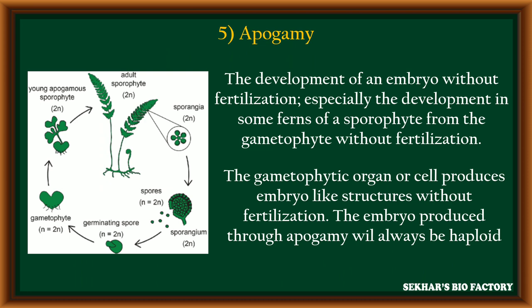The last method is apogamy. Apogamy is generally observed in fern plants. In this method, the development of embryo takes place without fertilization — specifically, the development of some parts of the sporophyte from the gametophyte without fertilization. Gametophytic organs or cells can produce embryo-like structures without fertilization, which can become a new plant. Such plants are always haploid in nature.